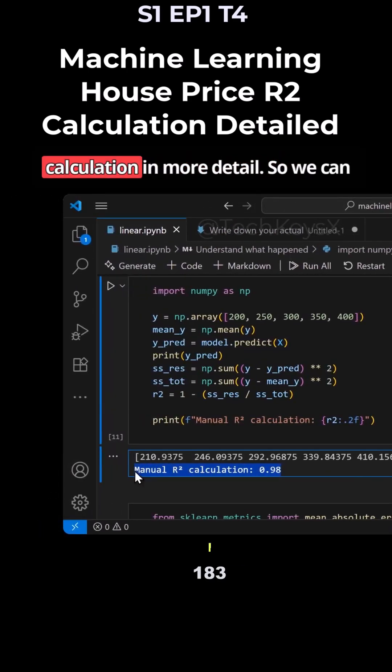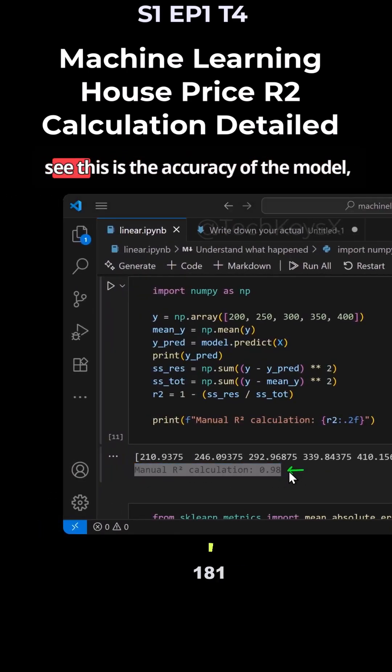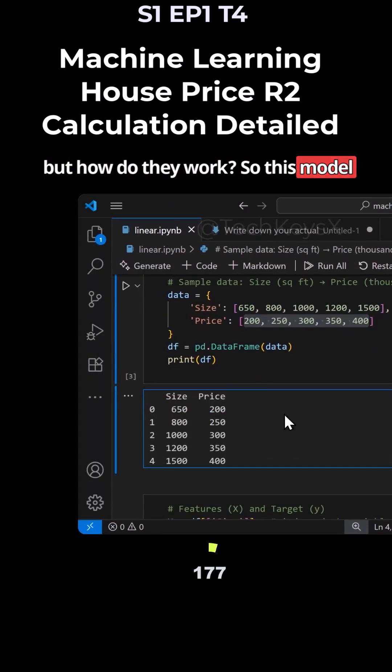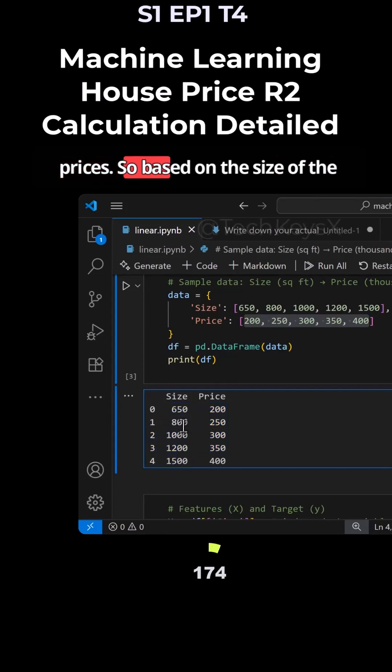Let's have a look at this R2 calculation in more detail so we can see this is the accuracy of the model, but how does it work? So this model we have here is based on house prices. Based on the size of the house, we work out the price.